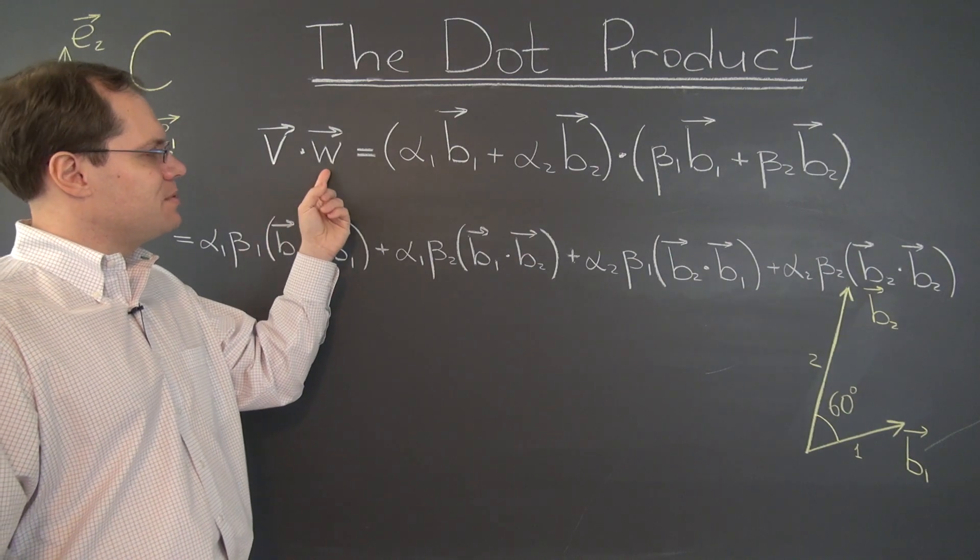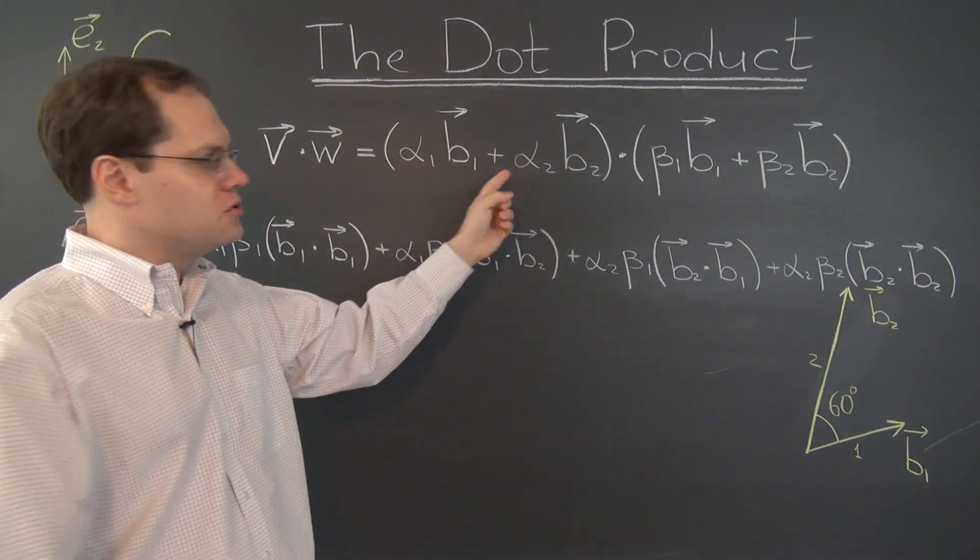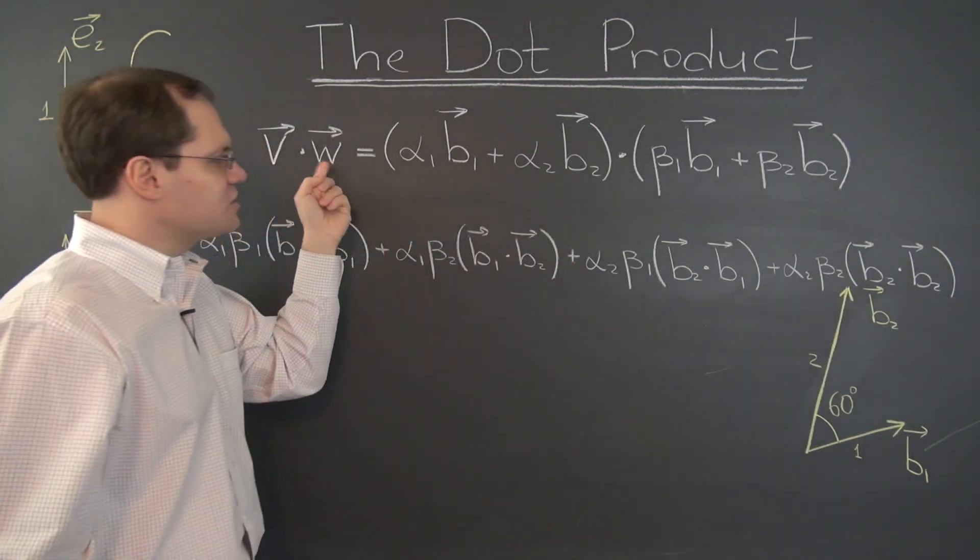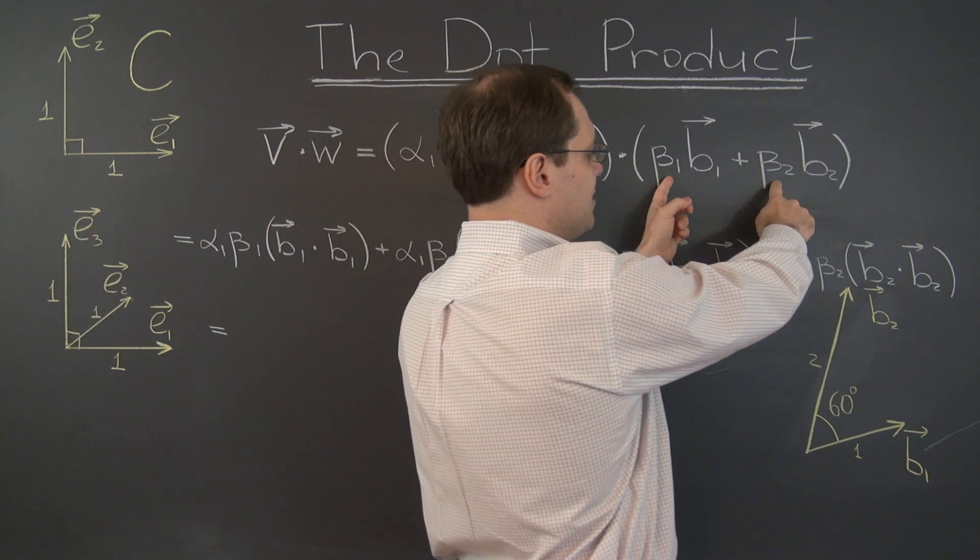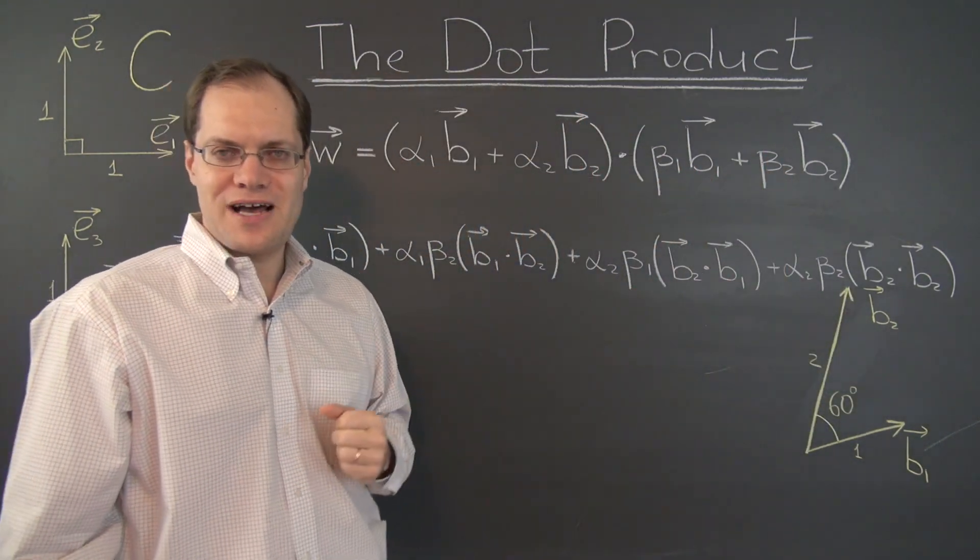Here's what I'm talking about. Suppose we're dotting v and w, and the coefficients of v are once again named alpha 1 and alpha 2, except it's with respect to a new basis. And the coefficients of w are once again beta 1 and beta 2 with respect to the new basis. Same names, different values.